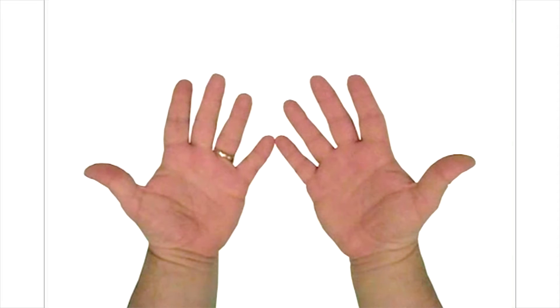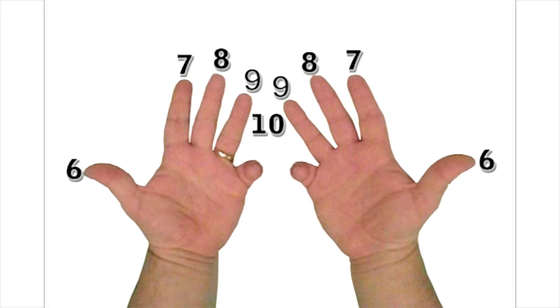Put your open hands in front of you, with your palms facing upward. Your fingers and thumbs are going to represent the following numbers: 6, 7, 8, 9, 10. Your thumbs are always a 6, your little fingers are always a 10.